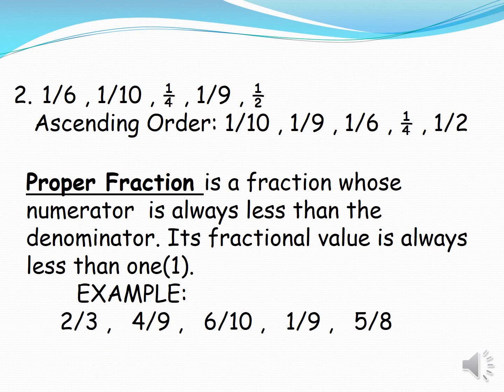Number two: we have the set of fractions one sixth, one tenth, one fourth, one ninth, one half. Let us arrange this in ascending order. So it becomes: one tenth, one ninth, one sixth, one fourth, one half.